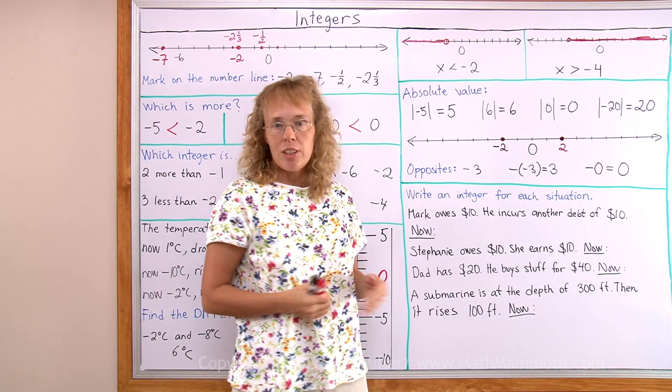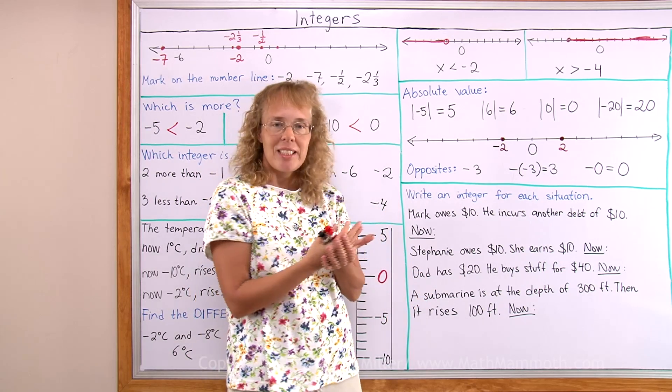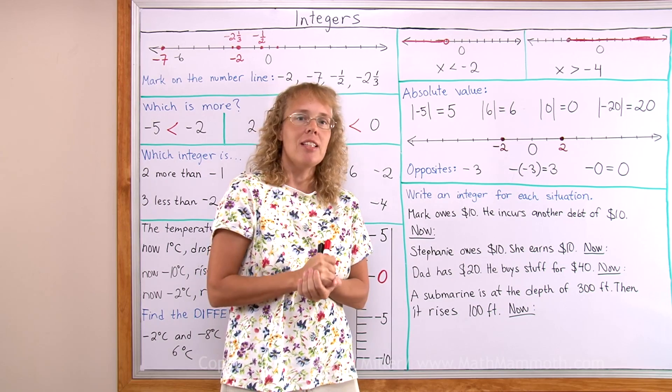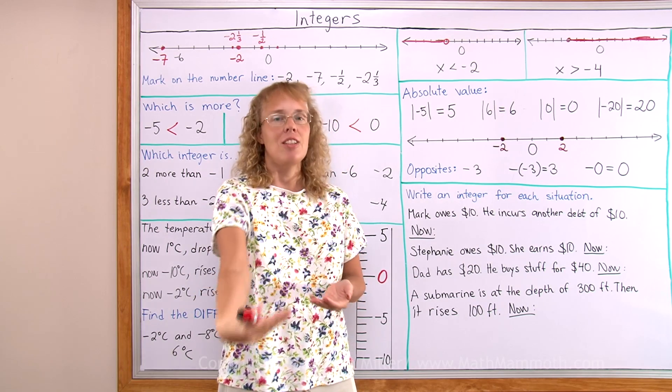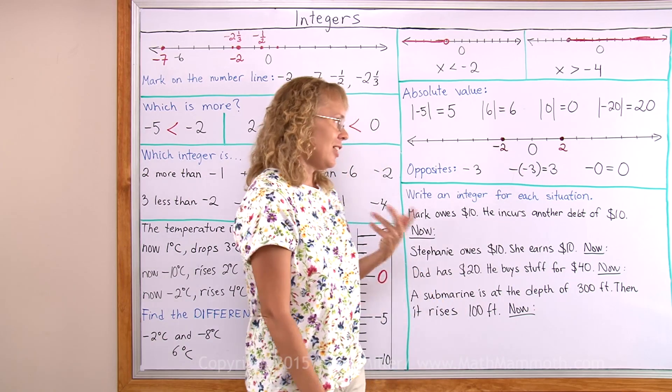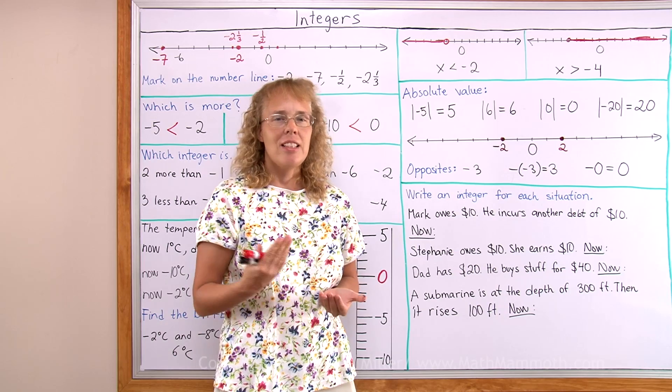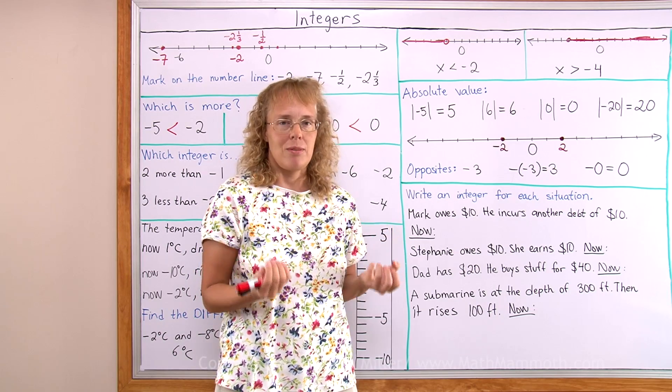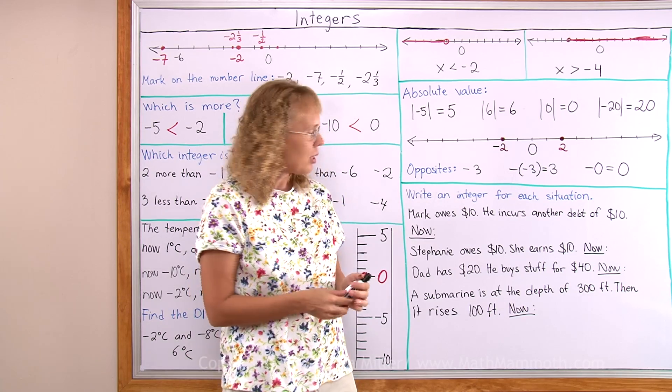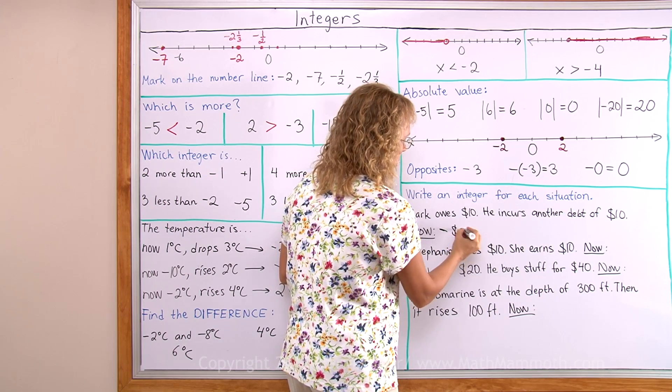Write an integer for each situation. Mark owes 10 dollars. That means basically Mark's money situation is negative 10 dollars. Or the bank might write that Mark has negative 10 dollars. Now he incurs another debt of 10 dollars. Now what is Mark's money situation now? You could say that oh he owes 20 dollars. That's true. But if we use integers, if we use just a number, his money situation is negative 20 dollars.